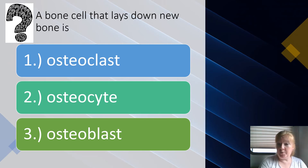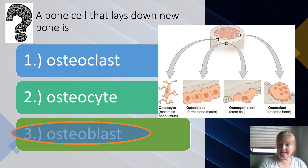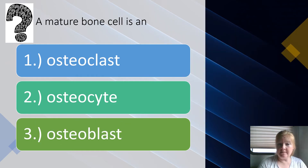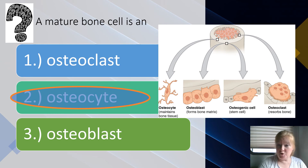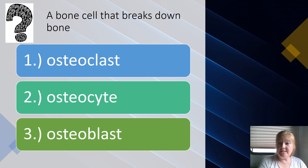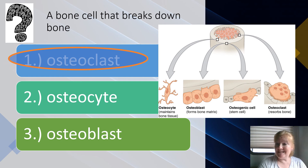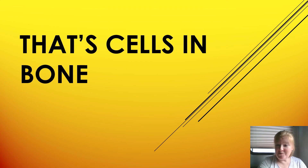A bone cell that lays down new bone is the osteoblast — the builder. A mature bone cell is the osteocyte. A cell that breaks down bone is the osteoclast — the cleaner. Those are the three main types of cells in bone. Hope you learned something new.